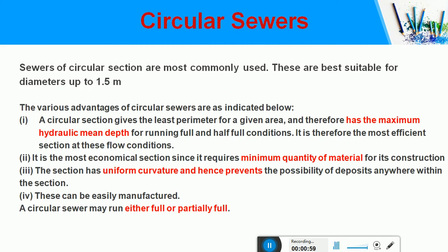As seen in the design of water supply systems, most pipelines are circular in nature, and circular sewers are most commonly used. This is because of the following advantages: it gives the least perimeter for a given area and therefore has the maximum hydraulic mean depth for running full and half full conditions, making it the most economical section.